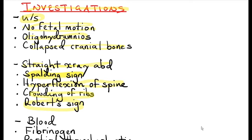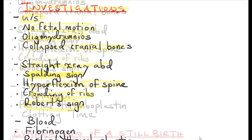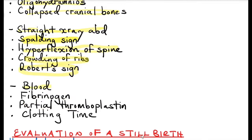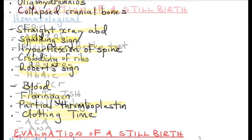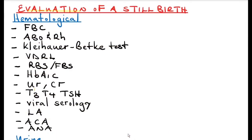Robert's sign is where there is appearance of a gas shadow in the chambers of the heart and vessels. Collect blood to estimate fibrinogen levels and partial thromboplastin time; you can also do a bedside clotting time. This is because there is a risk of disseminated intravascular coagulation when a fetus has been retained for more than two weeks.